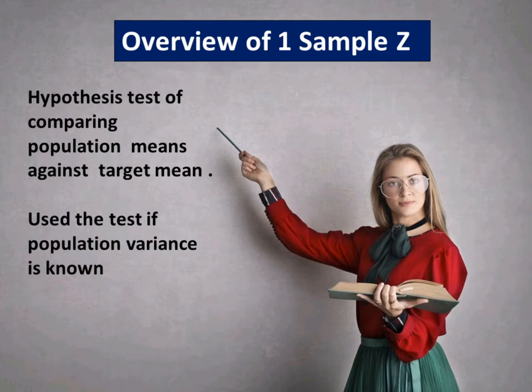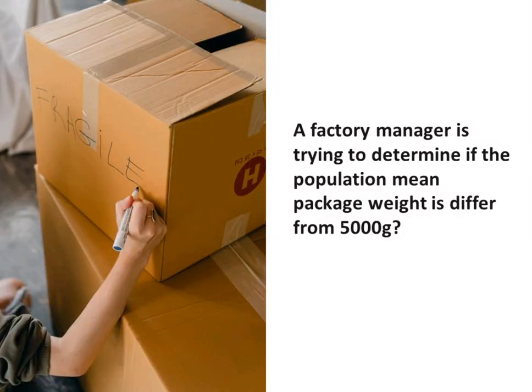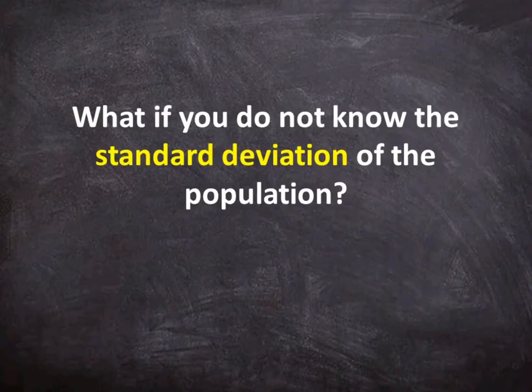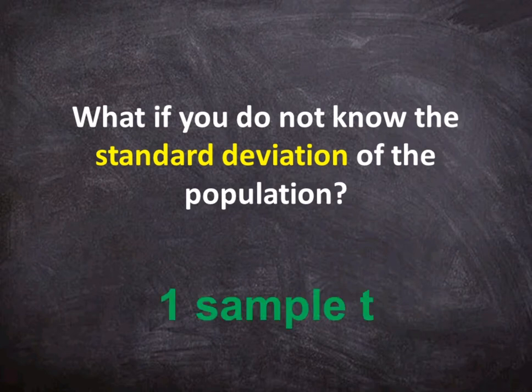1 sample Z test is a hypothesis test of comparing population means against target means. Use the test if population variance is known. For example, a factory manager is trying to determine if the population mean package weight differs from 5000 grams. What if you do not know the standard deviation of the population? Use 1 sample T test if the population standard deviation is unknown.